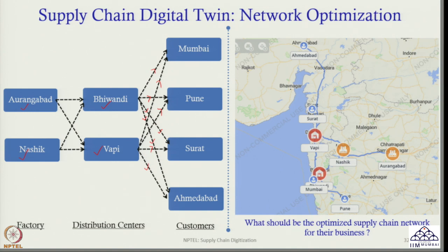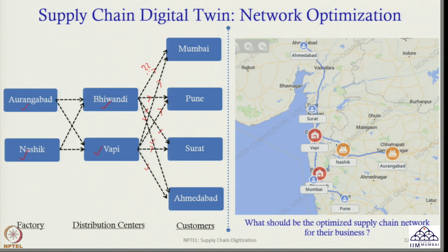They also need to decide how much quantity will be transported — from which DC to which market — so that demand at Mumbai, Pune, Surat, and Ahmedabad is satisfied. So the decision covers: where to locate the factory, where to locate the distribution centres, which factory serves which DC, which DC serves which customers, and how the movement of products will happen from factory to DC and DC to customers.